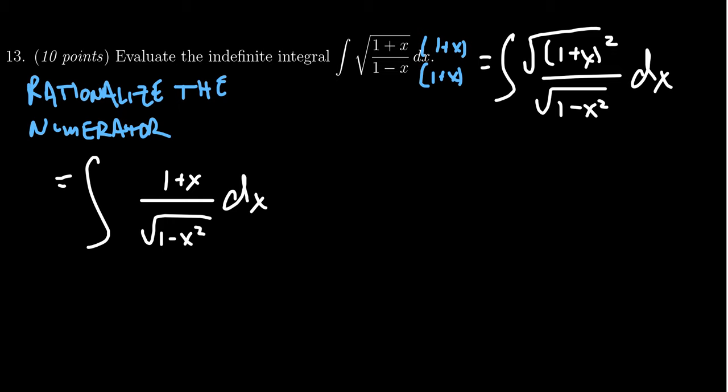And this is something we can see now, that we have this difference of squares. And so that's really what I was trying to create in this rationalizing the numerator. I was trying to create this difference of squares so I could do a trigonometric substitution.